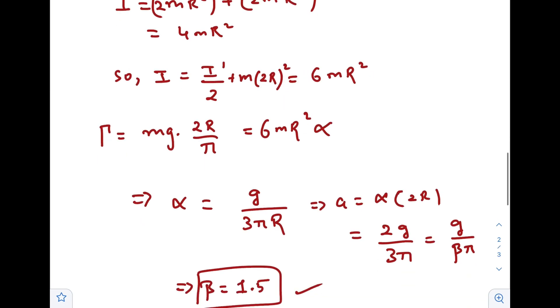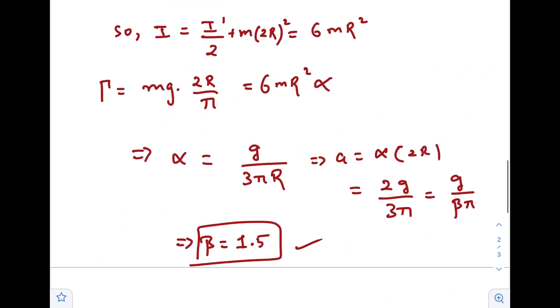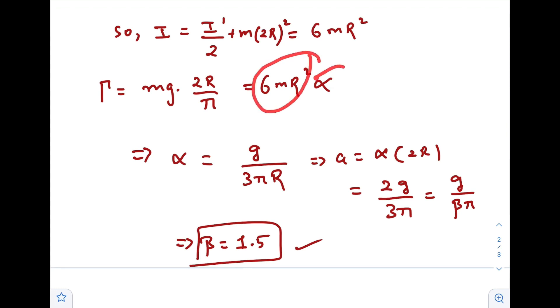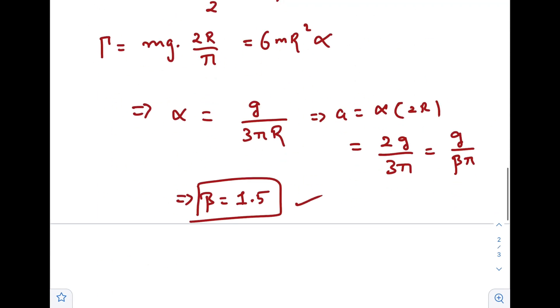So the torque created is mg times perpendicular distance, which equals I into alpha. So the angular acceleration created for the whole structure is this one. The linear acceleration is alpha times the perpendicular distance, that is twice the radius of the semicircular ring.